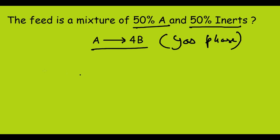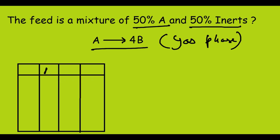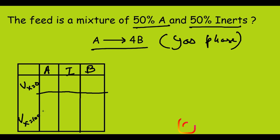In this case, I recommend making a table. The first column will be A (the reactant), the second will be I (the inert), and the third will be B (the product). The first row will represent volume when conversion is zero, and the second row will represent volume when conversion is 100 percent.